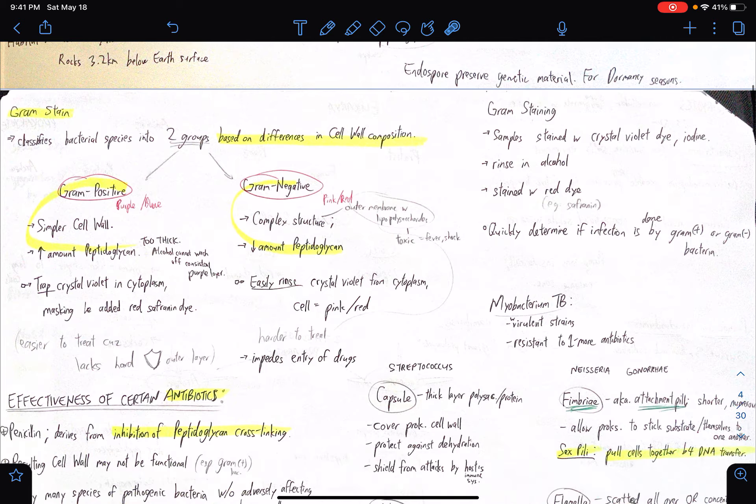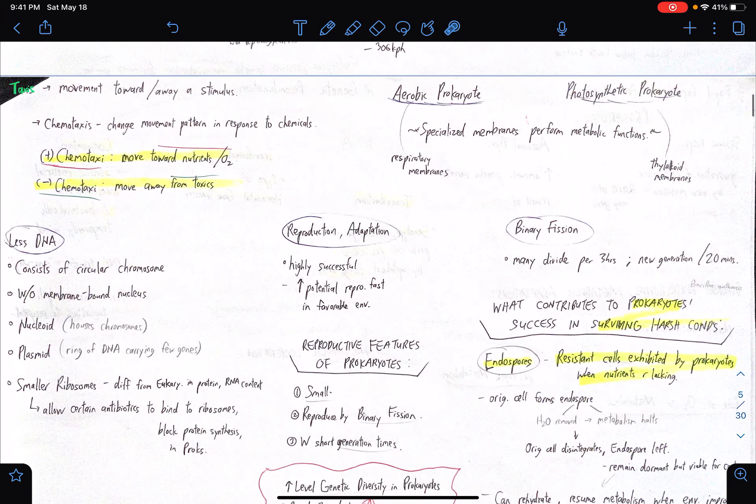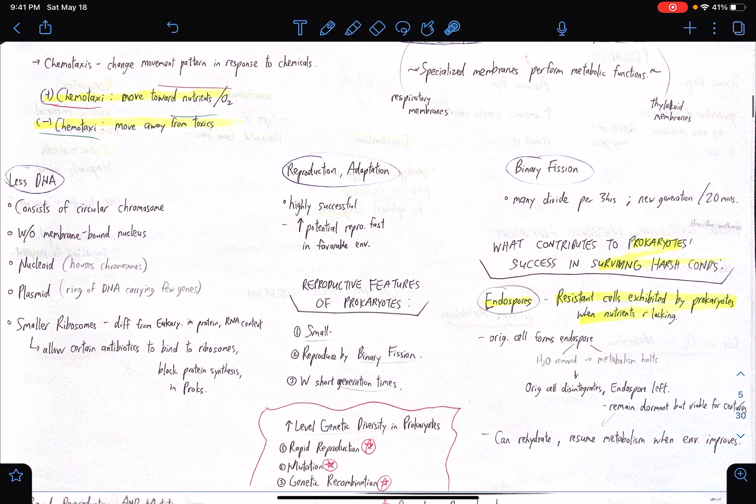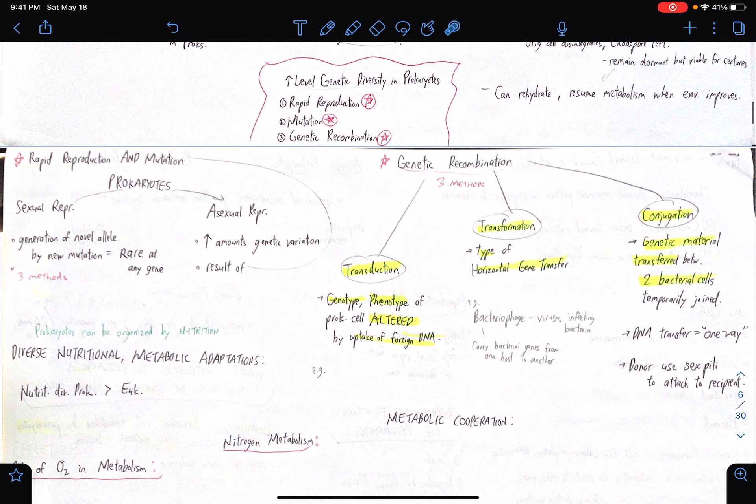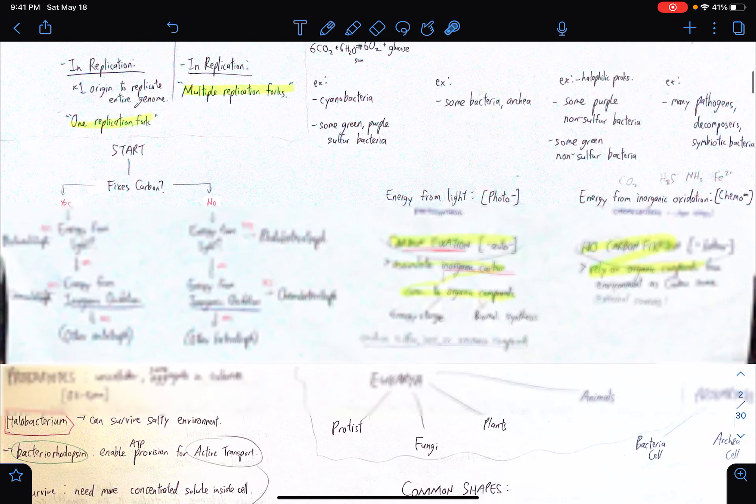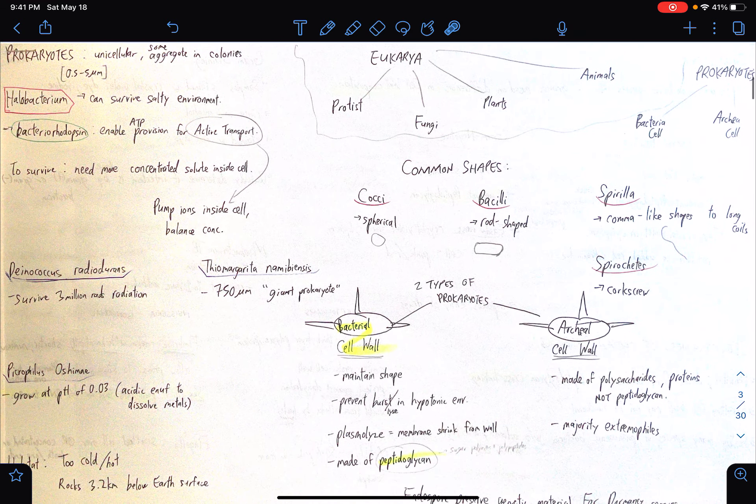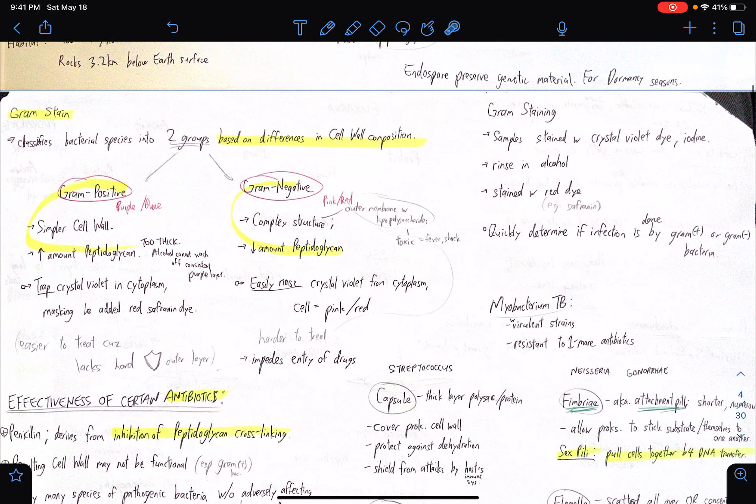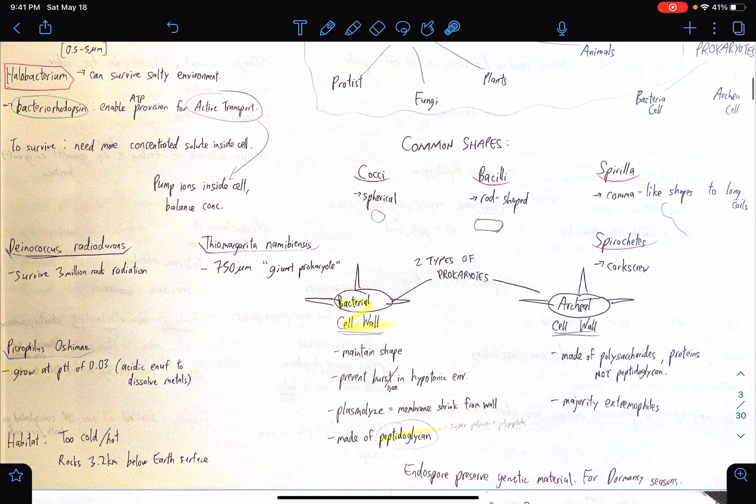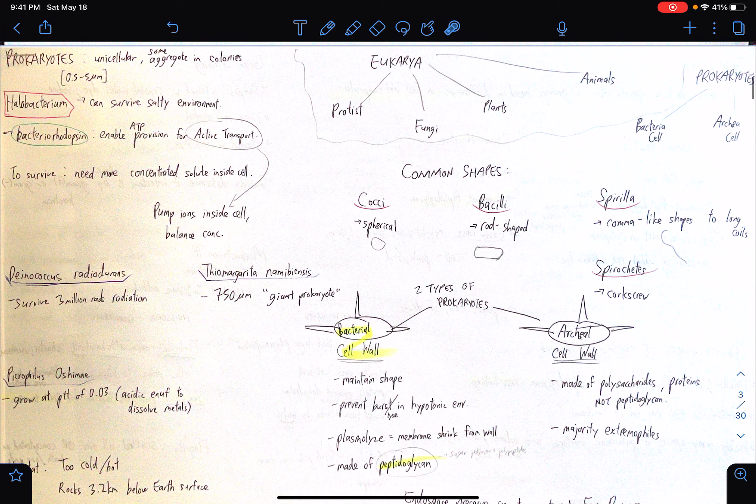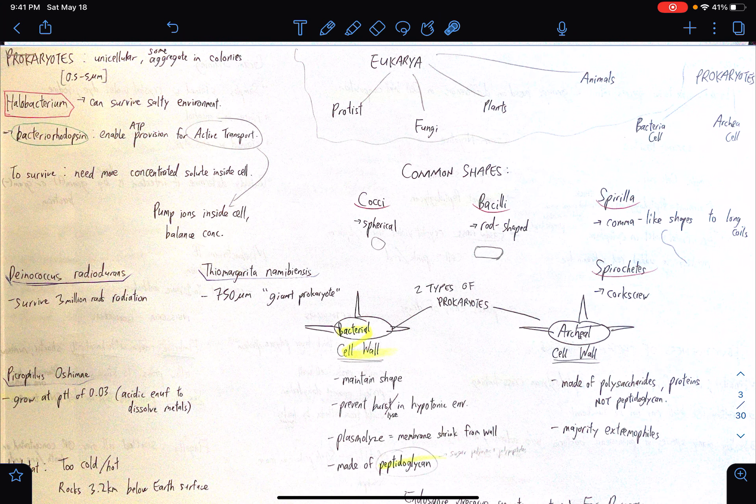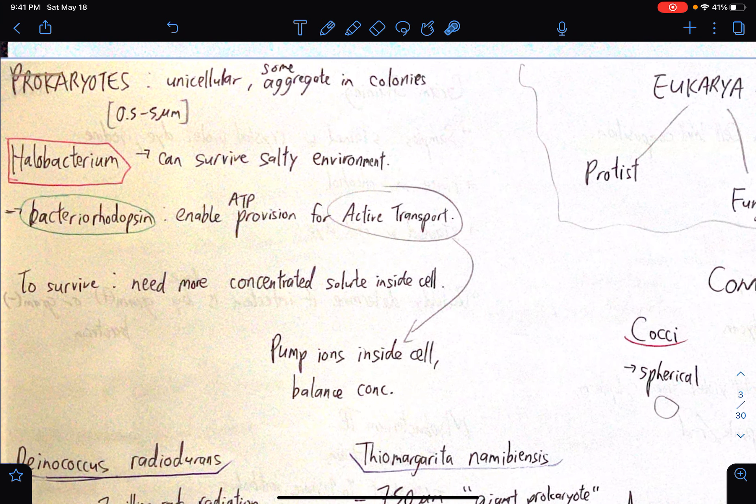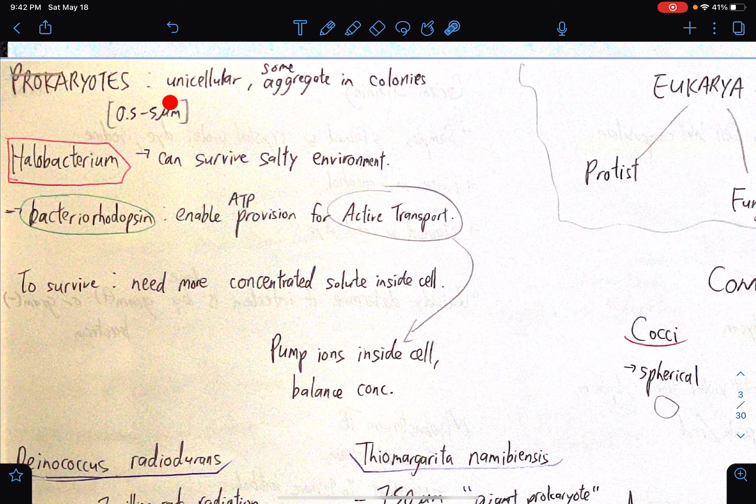Okay, how long is this gonna be? Dang, this is gonna be a lot. Okay, maybe we'll finish this entire page, then we'll end the video. Okay, so prokaryotes. They're unicellular, and some of them aggregate in colonies. So the size is between 0.5 to 5 micrometers.